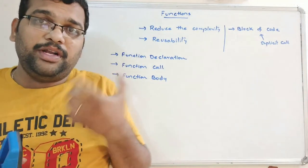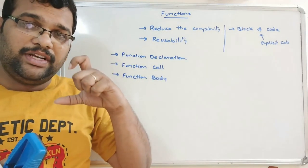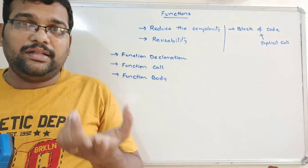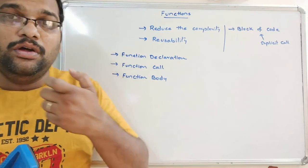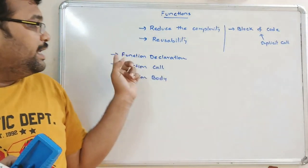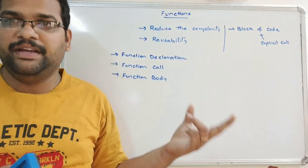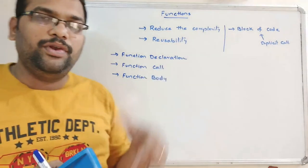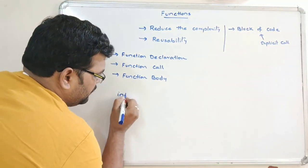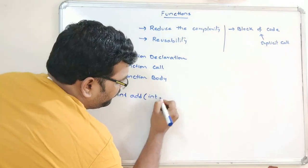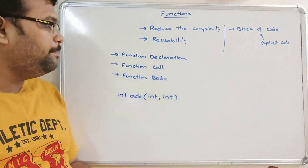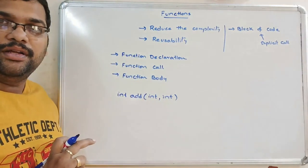The function body — the complete implementation of that function — should be written outside the main function. Since execution starts with the main function, we give a reference to the function body inside main, which is called the function call. The function declaration should be written above the main function. One important thing to remember: the return type, function name, and number of arguments should be the same in all three — the function declaration, function call, and function body.